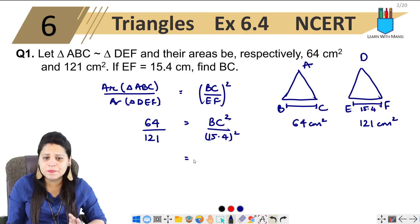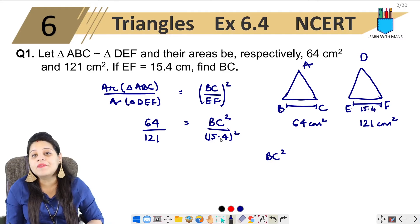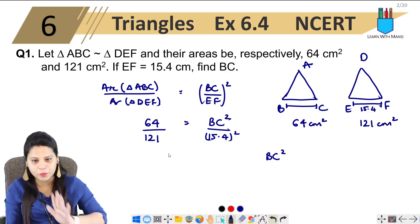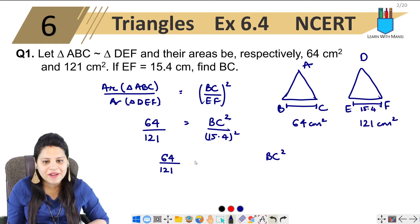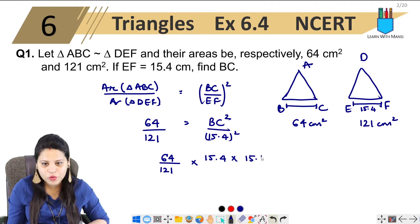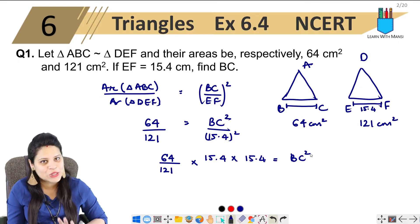Now we take a simple calculation. We have BC squared equals 64 upon 121, multiplied by 15.4 into 15.4. So BC squared equals 64 upon 121 multiplied by 15.4 squared.